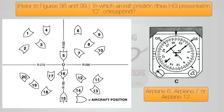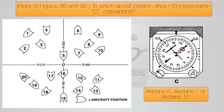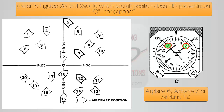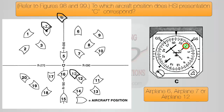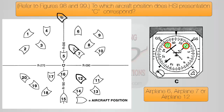All you need to do is follow the triangle — the to/from flag — to the cardinal direction it points to. In this case, as you can see, it points north. Next, we follow the needle to the side and notice that it points to west. This means that to get to the station, we need to fly north-west. If we fly north-west on Airplane 6, we would fly away from the station, and the same goes for Airplane 7. If Airplane 12 flies north-west, it will definitely get to the station, and Airplane 12 is the correct answer.